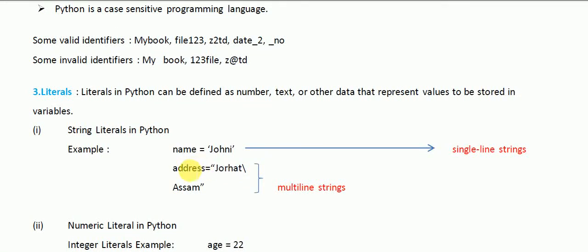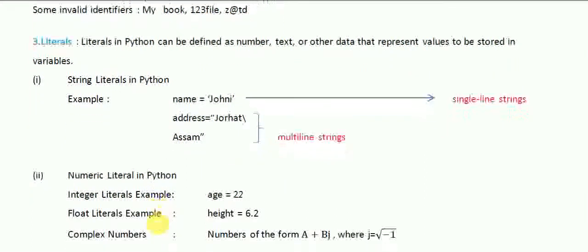Next are numeric literals. There are different types of numeric literals. The first one is integer. Integers, as you all know, don't have decimal numbers. For example, 'age = 22' or 'a = 10' — these are known as integers.